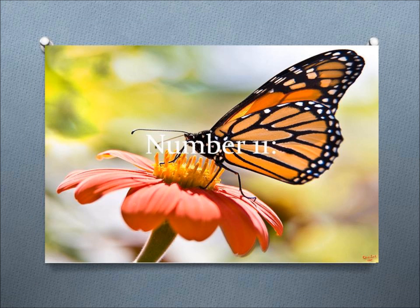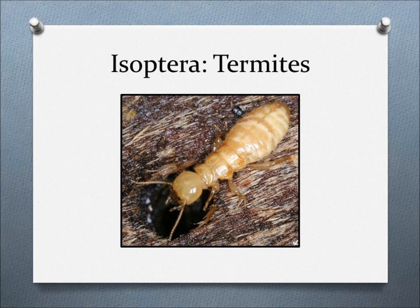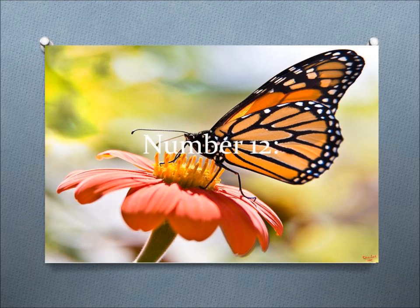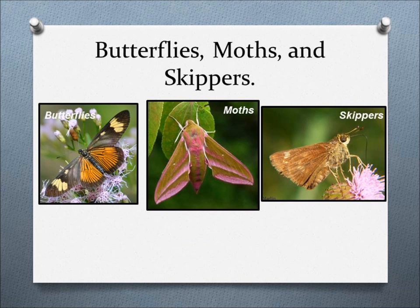Number 11, Isoptera. This order includes termites, the insects that build large nests that house entire colonies. Number 12, Lepidoptera. This order includes butterflies, moths, and skippers.